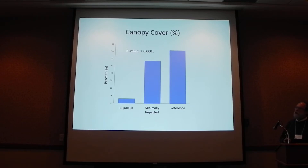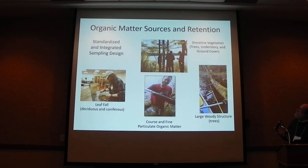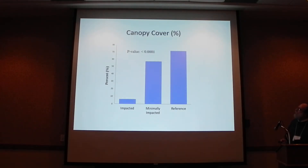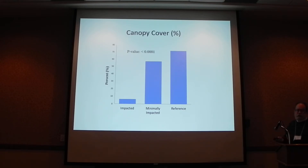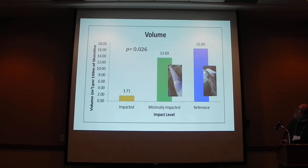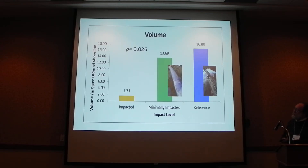This is a summary of that information. The reference sites and minimally impacted sites had much higher woody structure cover than the impacted sites — no mystery, but at least we have measurements. The volume of woody structure was much higher at the reference sites compared to the impacted sites. One minimally impacted site was biased somewhat by human-cut logs, which did affect those results.